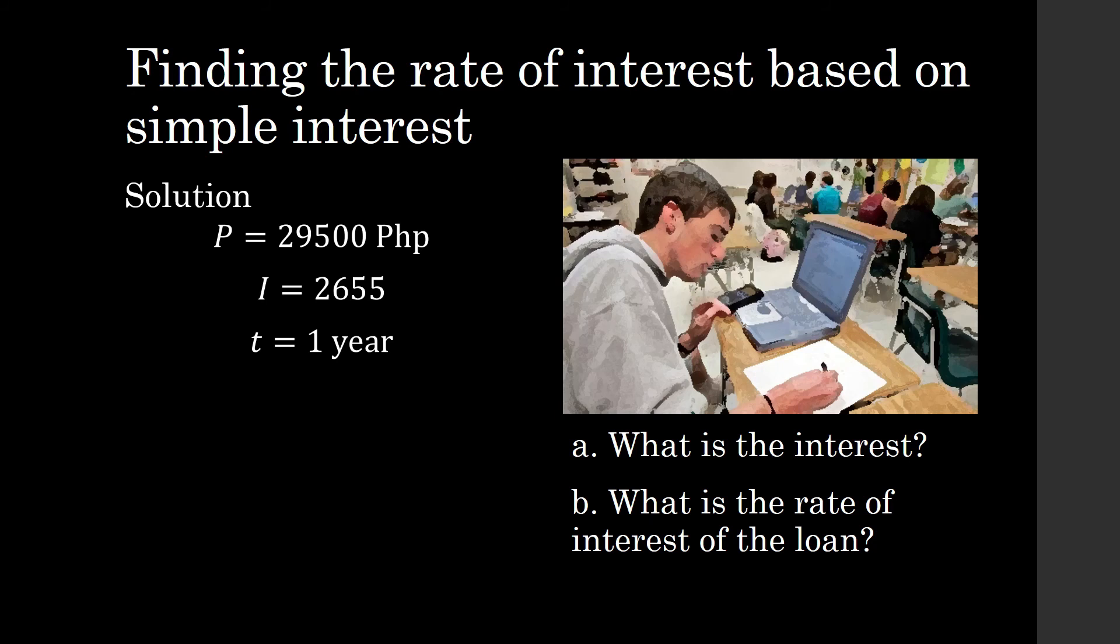How do we compute for the interest? It's equal to the principal loan times R times T. So solving for R, R is equal to I divided by P times T. So the interest rate is 2,655 divided by 29,500, which is equal to 0.09 or 9%.